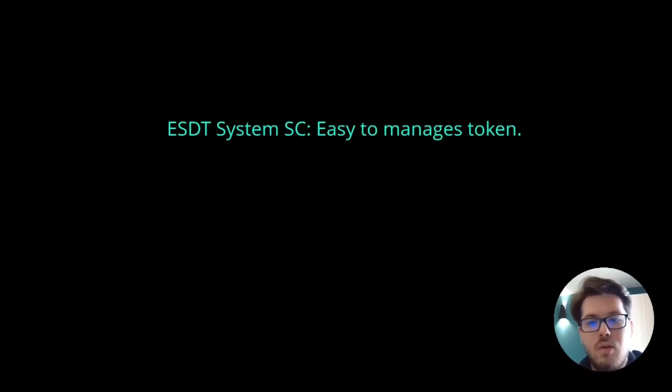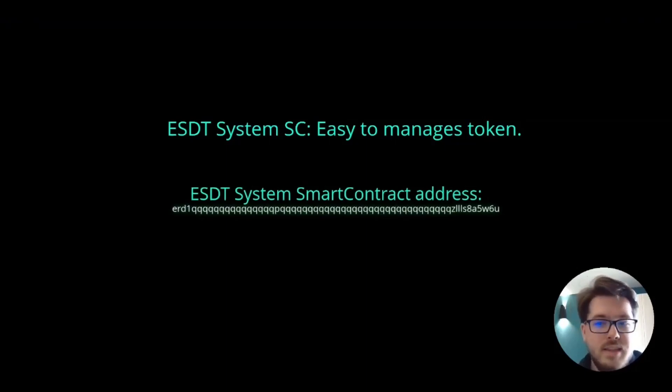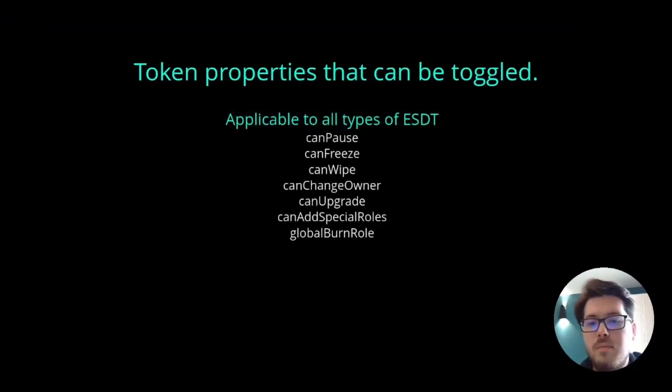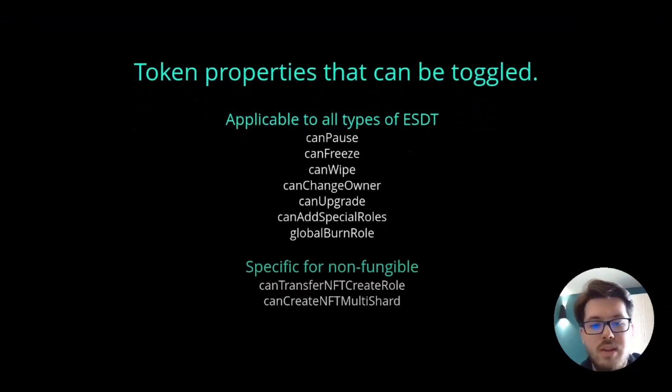As for managing tokens, even though no smart contract is required, there is still a system smart contract at the protocol level called the ESDT system smart contract. It only deals with issuing tokens and managing them, but it doesn't handle transfers, minting or burning. Since the tokens have no smart contract, there are some properties that can be enabled or disabled — those properties are applicable to all ESDT types or only specific to non-fungible ESDTs.